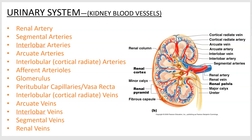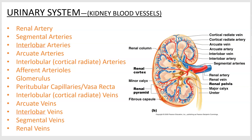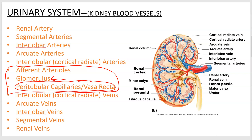Then we go to the interlobar arteries, and from there to the arcuate arteries — arcuate sounds like an arc, so these arching-looking vessels. The next ones are called interlobular, but I call them cortical radiate arteries because that makes more sense. They radiate out into the cortex. From there we get to the afferent arterioles, which go toward the glomerulus where filtration takes place, and then those capillaries continue as peritubular capillaries — I'll show those in more detail on the next slide.